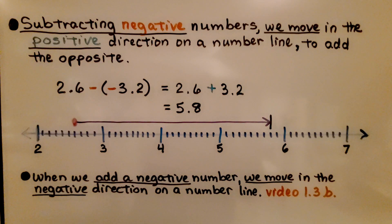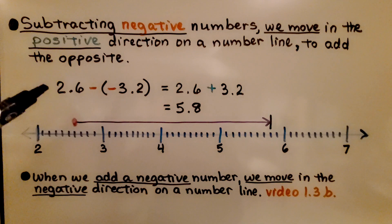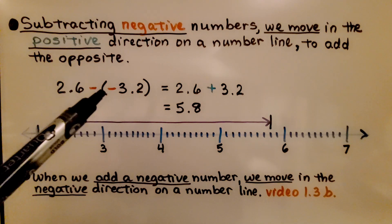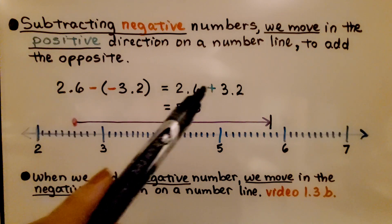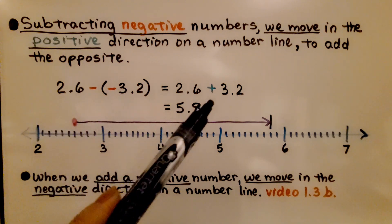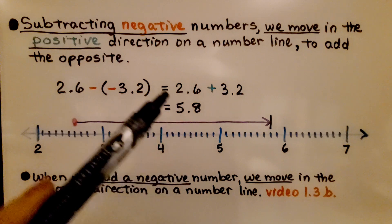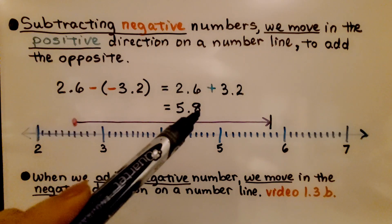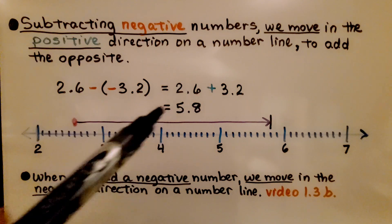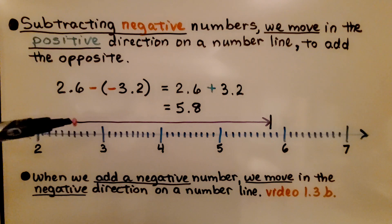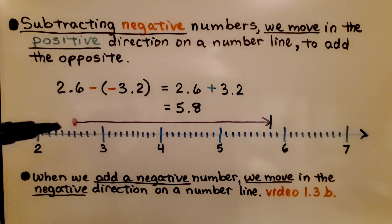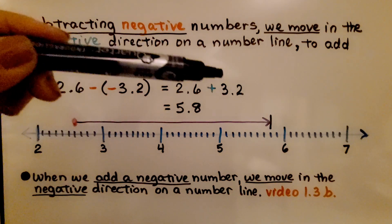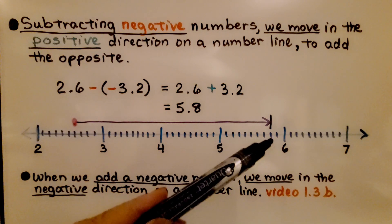Subtracting negative numbers — we move in the positive direction on a number line, or add the opposite. If we have 2 and 6 tenths and we're subtracting a negative 3 and 2 tenths, we rewrite it as adding the opposite of negative 3 and 2 tenths, which is positive 3 and 2 tenths. Now we can just add them: 6 tenths plus 2 tenths is 8 tenths, and 2 plus 3 is 5 whole numbers, giving us 5 and 8 tenths. On the number line, we start at 2 and 6 tenths and move in the positive direction by 3 and 2 tenths, which brings us to 5 and 8 tenths.